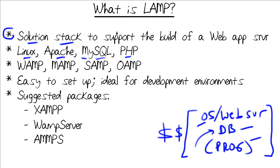Simple as that. Now, folks get kind of funny with their terminology. Depending upon which host operating system is in place, you have different acronyms. WAMP is simply the same stack in terms of MySQL, Apache, and PHP, but it's Windows. M is Mac, S is Solaris. There are several versions for different operating system platforms. You'll find the vast majority of them are either LAMP, WAMP, or MAMP.